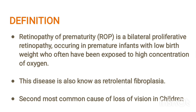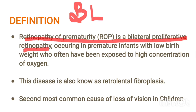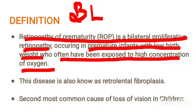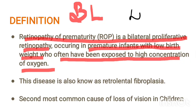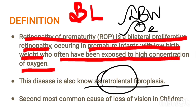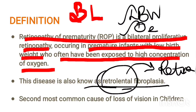Retinopathy of Prematurity is a bilateral proliferative retinopathy — it affects both eyes. It occurs in premature infants with low birth weight who are often exposed to high concentrations of oxygen. The main criteria are low birth weight plus exposure to oxygen therapy. The disease is also called retrolental fibroplasia — 'retro' means back, 'lentil' means lens — meaning the defect is behind the lens, in the retina.